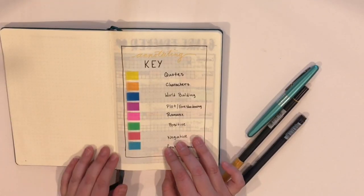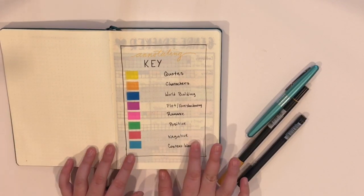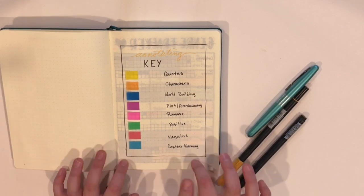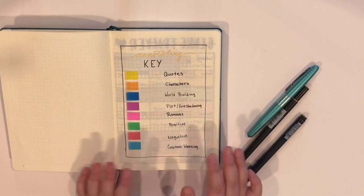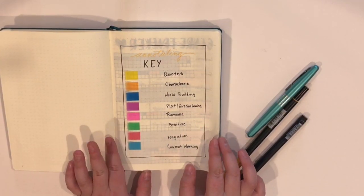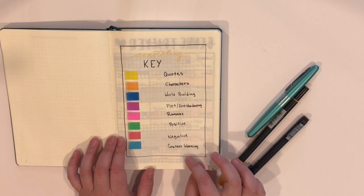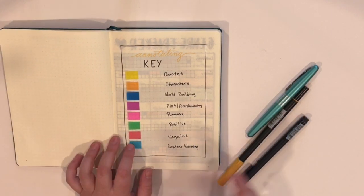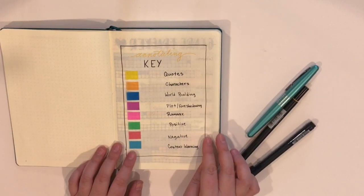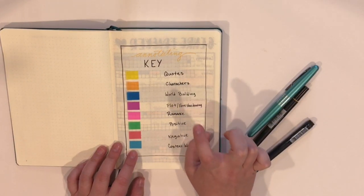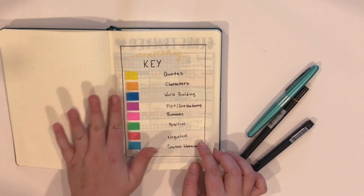The first page I have is my annotating key. I'm going to do a separate video on how I annotate books and that's coming later in the month. But this is my key for annotating every single book, every color. It means the exact same thing in every single book. I was finding that I was having to flip back to remember what certain colors were, especially with characters, world building and plot.